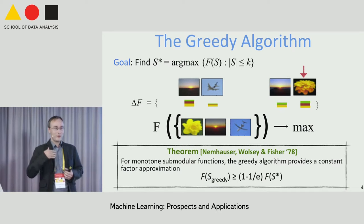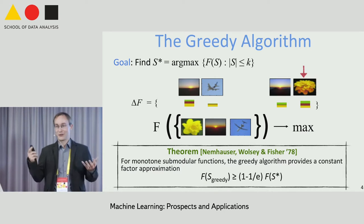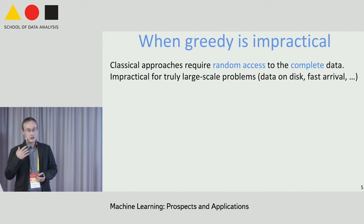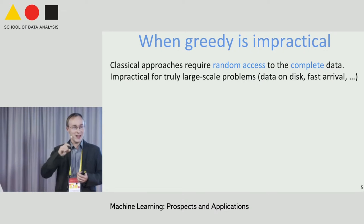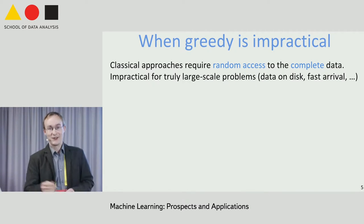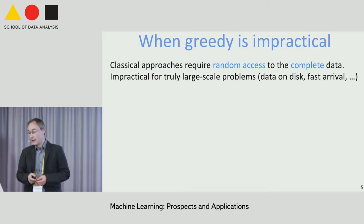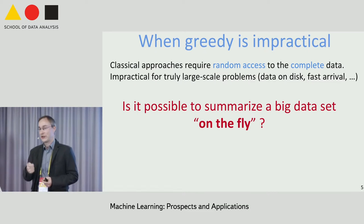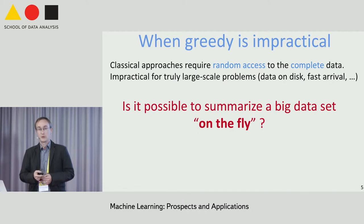For maximization, greedy is a prototypical fast algorithm—maybe the story ends there. But with very large datasets, this classical algorithm can reach its limits. For example, you might not have random access to your data but must read it sequentially from disk, or it arrives at a pace where you can't even store everything. So it's very natural to ask: is it possible to summarize a dataset and select a good subset on the fly without having seen the entire dataset? Are there good streaming algorithms for submodular maximization?